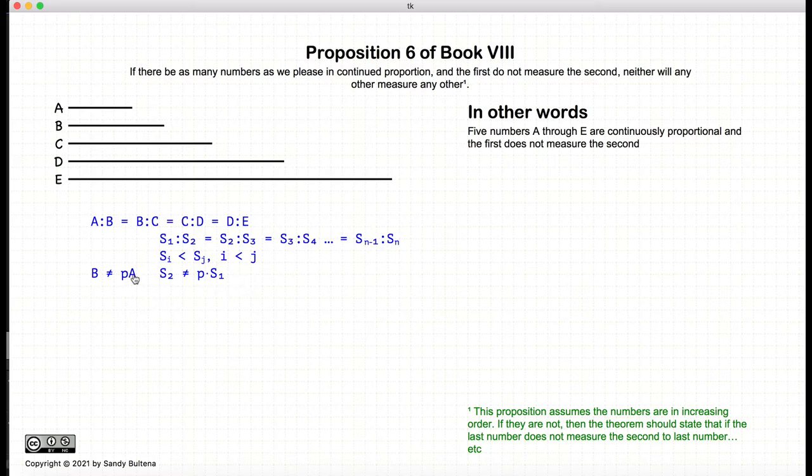This proposition states if A does not measure B, or in a more generic sense, if the first element of the set does not measure the second element of the set, then there is no element of the set S of I that will measure another element of the set S of J. I put in the I is less than J just because we're doing it in increasing order, but because it's in increasing order, we probably don't need this qualification. But no element in the set will measure any other element in this set. So that's what we're trying to prove.